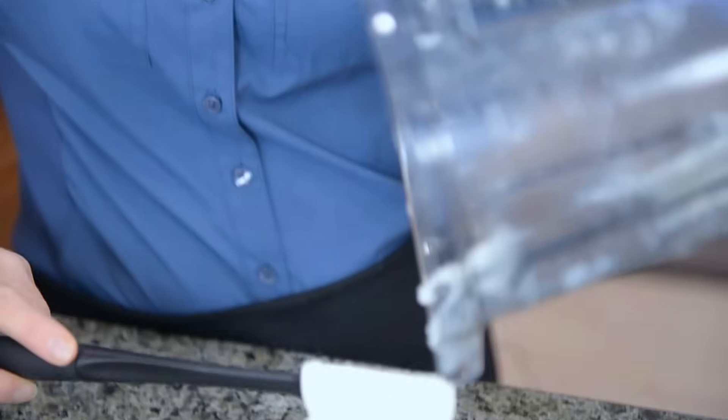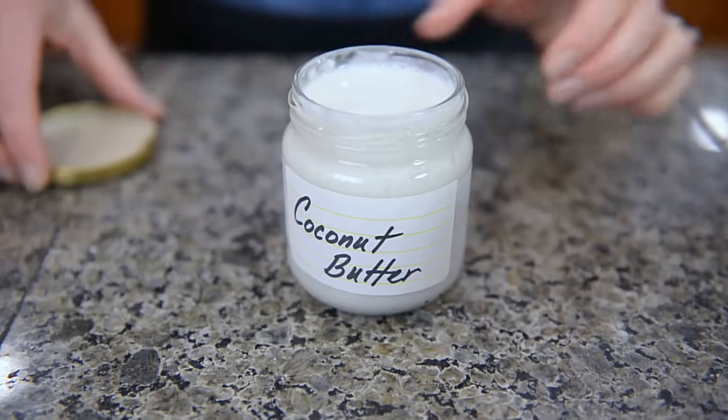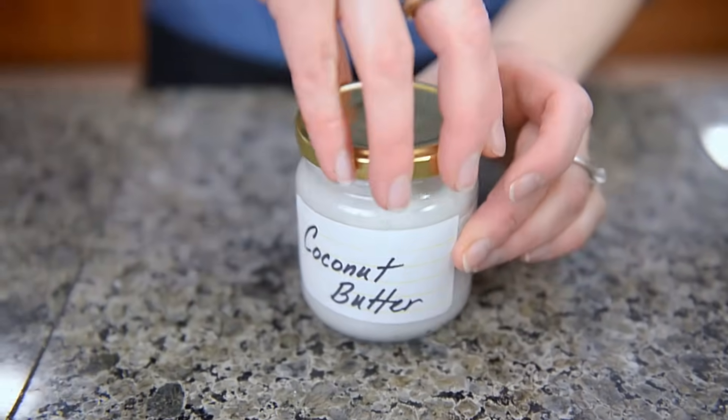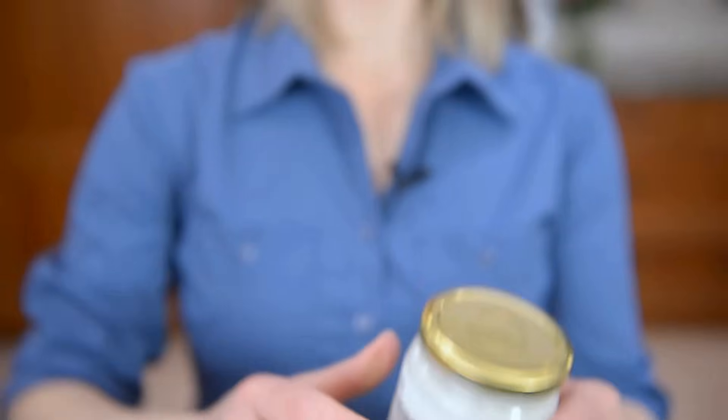I think scraping it out of the Vitamix actually takes longer than processing it in the first place. My rich and creamy coconut butter is all whipped up and ready to go. I can't wait to have this on my coconut pancakes tomorrow morning. It is the best topping, and it is completely good for our body and paleo friendly. This stores very nicely in your pantry or refrigerator.